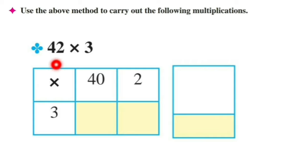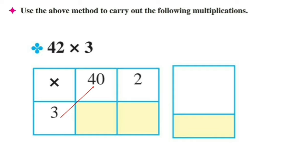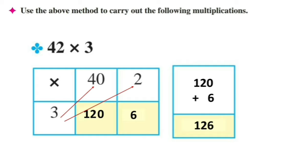Now let's do this method for 42 multiplied by 3. 3 × 2s are 6, and 3 × 40 is 120. Now let's add these numbers: 120 plus 6. The answer is 126. So the final answer is 42 multiplied by 3 is equal to 126.